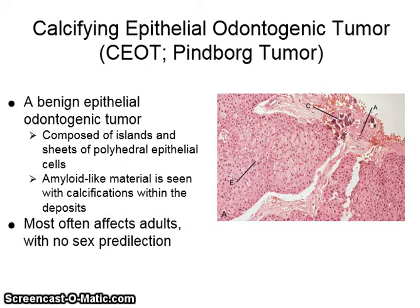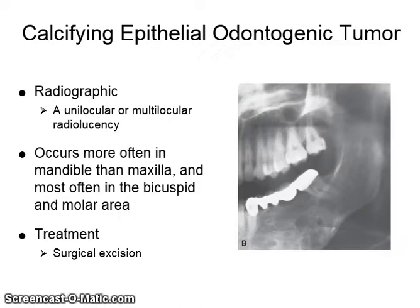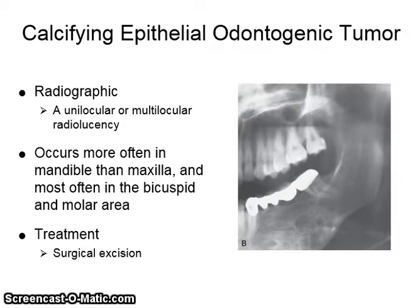Calcifying epithelial odontogenic tumor, or Pindborg tumor, is a benign epithelial odontogenic tumor composed of islands and sheets of polyhedral epithelial cells. Amyloid-like material is seen with calcification within the deposits. It most often affects adults with no sex predilection. Radiographically, it shows as a unilocular or multilocular radiolucency, occurring most often in the mandible in the bicuspid and molar area. It is treated with surgical excision.